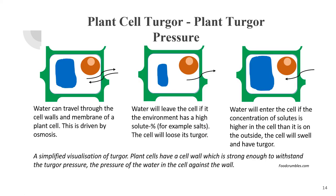Plant cell turgor and plant turgor pressure. Water can travel through the cell walls and membrane of a plant cell, driven by osmosis. The water will leave the cell if the environment has a high solute percentage, for example salts, and then the cell will lose its turgor. Water will then enter the cell if the concentration of solutes is higher inside the cell than outside. The cell will swell and have turgor.